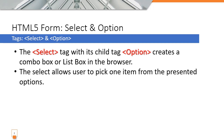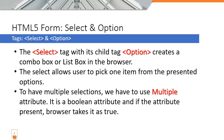When displayed as a combo box, the select allows the user to pick only one item from the presented options. When it is presented as a list box, using the multiple attribute, the user can select multiple items.